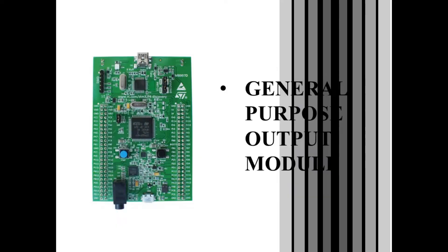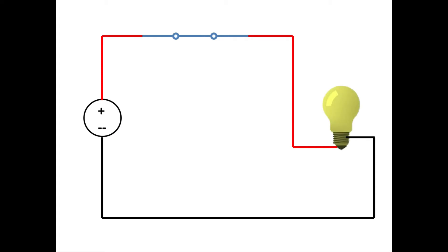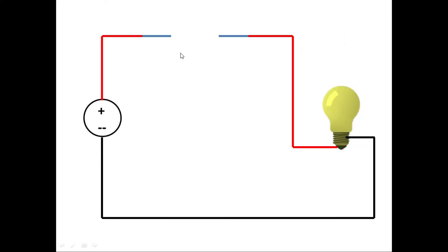Let us look at the circuit we have already used in the previous tutorial. Using this circuit, we have energized a DC lamp load using a DC voltage source via a series switch in between. We have already seen that if we turn this switch on and off thousands of times every second, then this DC lamp load will be perceived as glowing rather than turning on and off. Let us try to understand this with a practical demonstration using the STM32F4 discovery board, replacing this mechanical switch with an electronic switch.